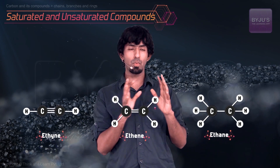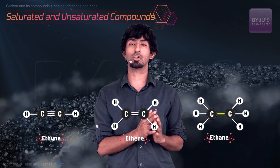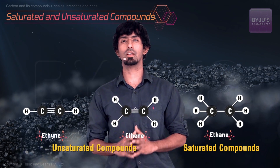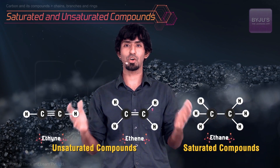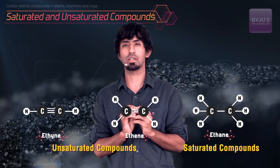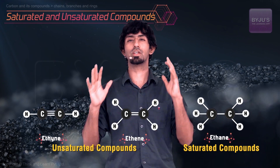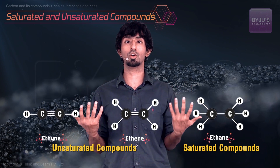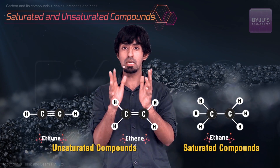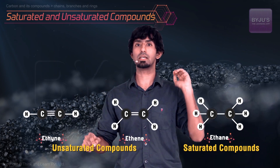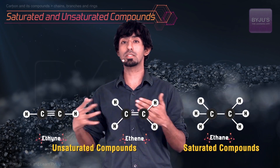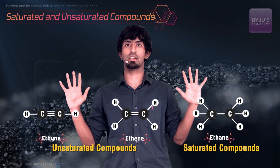Now there is a naming convention: whenever there are only single bonds, the compound is called a saturated one — so ethane is saturated, while ethene and ethyne are unsaturated. Compounds of carbon are called hydrocarbons, usually containing hydrogens and carbons, sometimes with other elements like chlorine, bromine, oxygen, or nitrogen. Ethane has only single bonds and is saturated; ethene and ethyne have double and triple bonds and are unsaturated. Whenever you see a double or a triple bond, you call that compound unsaturated — because saturated means it's satisfied.